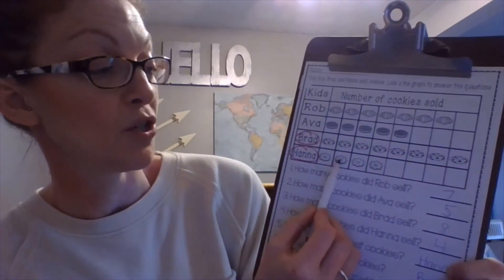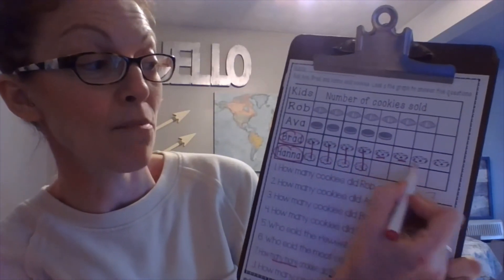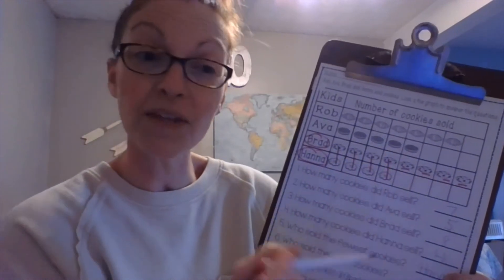So we're going to look at Brad and Hannah. Brad sold one, two, three, four, five, six, seven, eight, and Hannah sold one, two, three, four. So how many more did Brad sell? These two are the same, these two are the same, these two are the same, and these two are the same. Brad sold four more than Hannah because they both sold four, but Brad sold four more. Nice job.